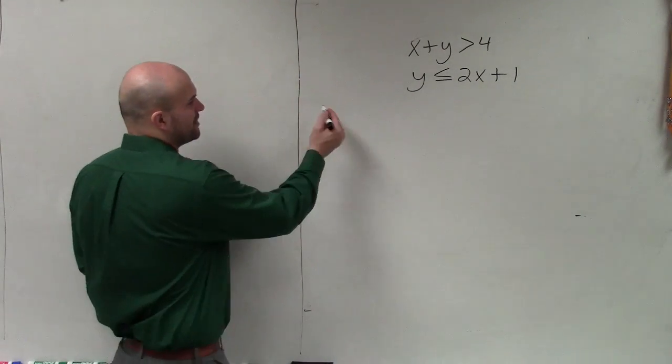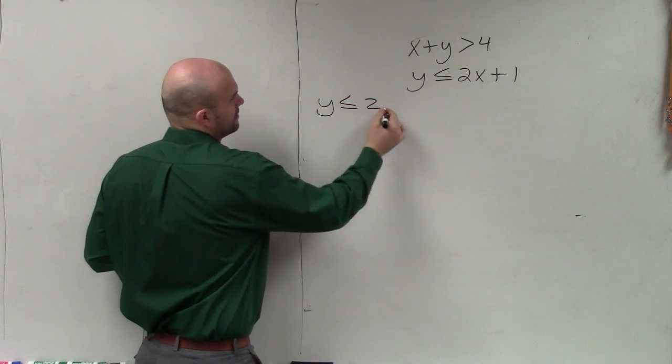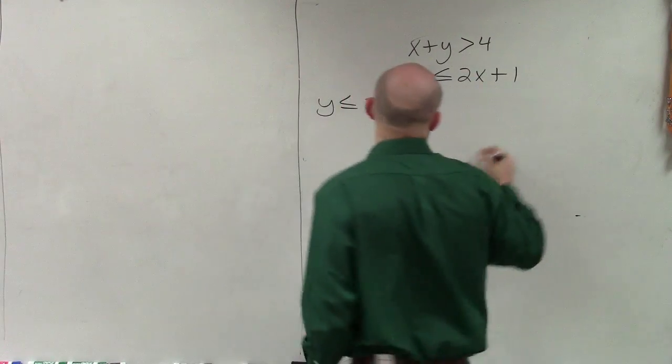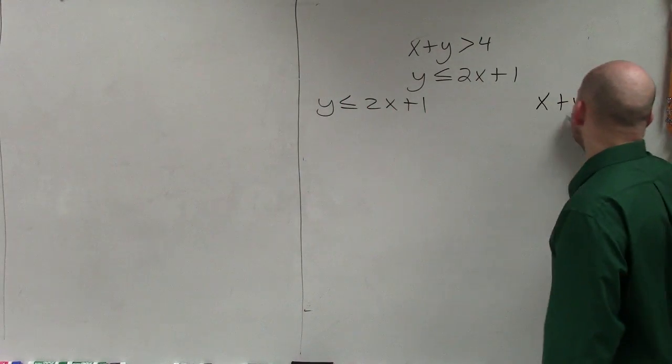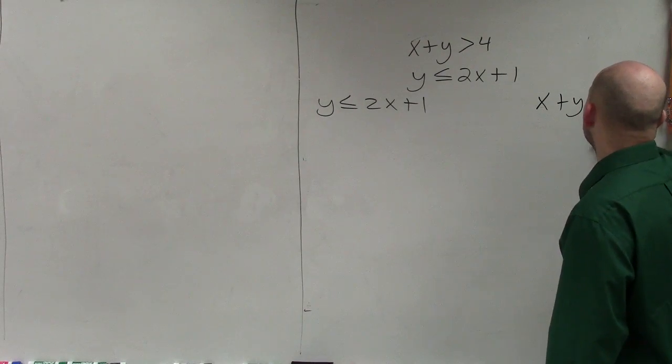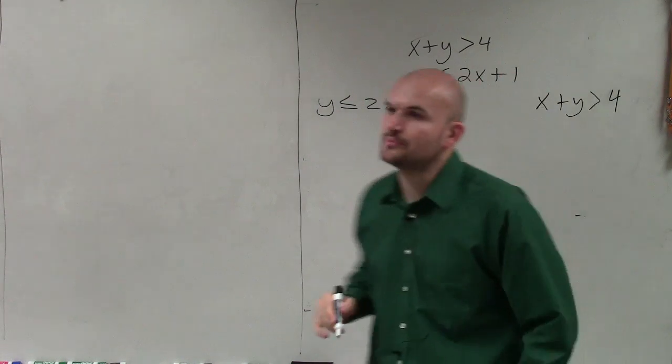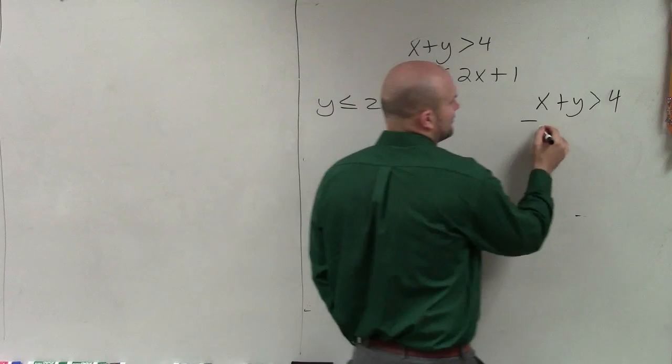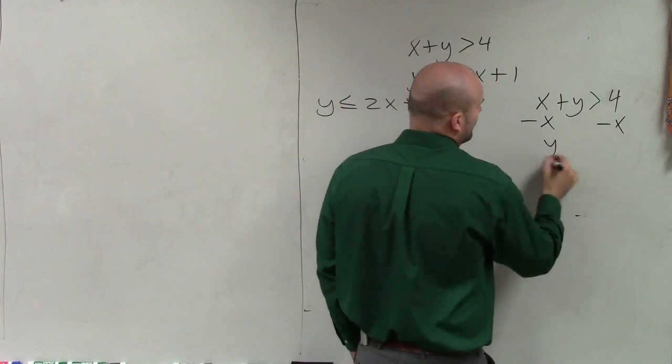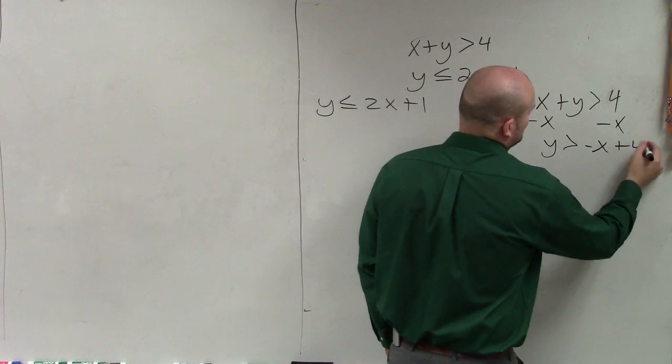We can see the first one is in slope-intercept form, and the second equation is not. I'm going to rewrite that equation in slope-intercept form. To do that, I will solve for y. So I have y is greater than negative x plus 4.